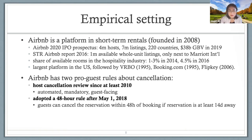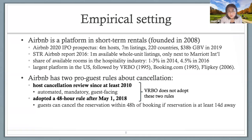In this paper, we focus on two pro-guest rules about cancellation on Airbnb. The first is Airbnb's automated mandatory guest-facing posting of host cancellations: if a host cancels a booking, that cancellation is automatically posted as a review on the platform. The second, more recent practice is the 48-hour rule, adopted after May 1st, 2018: guests can cancel a reservation within 48 hours of booking if the reservation is at least 14 days away. Both of these pro-guest cancellation rules are Airbnb-specific — Vrbo does not adopt them, giving us an interesting comparison.